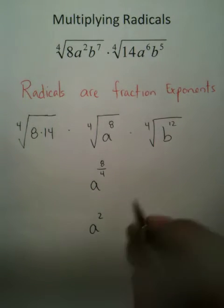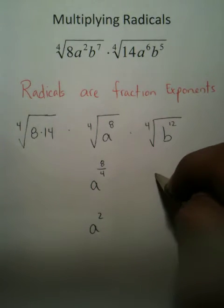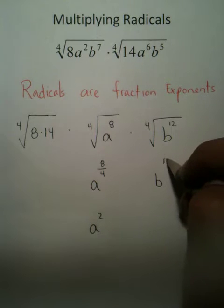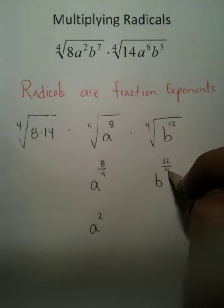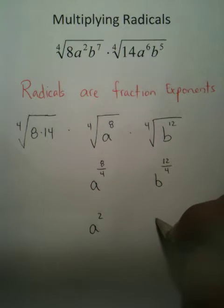Over here, same thing: 12 divided by 4, which is just 3. So you have B to the 3rd.